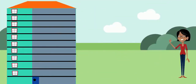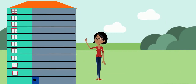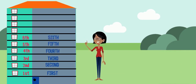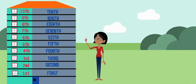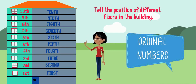Here is another example. The given picture shows different floors in the building. The numbers 1st, 2nd, 3rd, 4th, 5th, 6th, 7th, 8th, 9th, and 10th tell the position of different floors in the building. Hence, all of them are ordinal numbers.